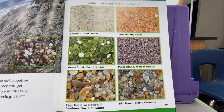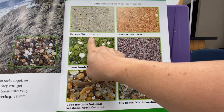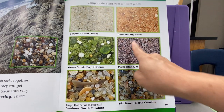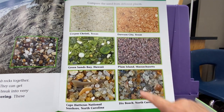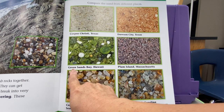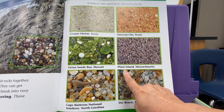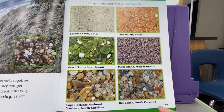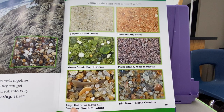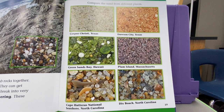Compare the sand from different places. This sand is from Corpus Christi, Texas. This sand is from Dawson City, Texas. This sand is from Green Sands Bay in Hawaii. And this sand is from Plum Island in Massachusetts. This sand is from Cape Pateras National Seashore in North Carolina. And this sand is from Dick's Beach, also in North Carolina.